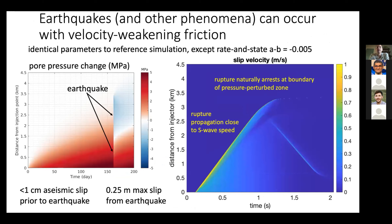If we switch to velocity-weakening friction instead of velocity-strengthening, we get seismic slip — earthquakes. With velocity-weakening friction: pressure rises from injection, then an earthquake occurs, with dilatancy creating suction. Zooming in, the earthquake lasts about a second; slip velocity shows rupture propagating at close to shear wave speed. It naturally arrests at the boundary of the pressure-perturbed zone in this simulation, though that depends on background shear stress. Papers by Norbeck and Horne, and by Garagash and Germanovich, outline conditions for ruptures bounded by vs. propagating beyond the pressure perturbation.